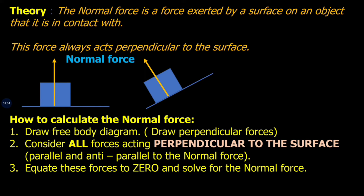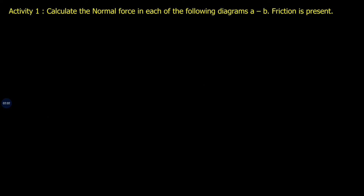You must be able to calculate the normal force on a horizontal surface and also on an inclined plane. To do that we're going to follow three steps. Step one: draw a free body diagram — always draw perpendicular forces on your free body diagram. Step two: consider all forces acting perpendicular to the surface, parallel and anti-parallel to the normal force. Equate these forces to zero and solve for the normal force.